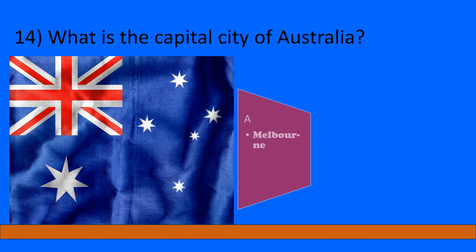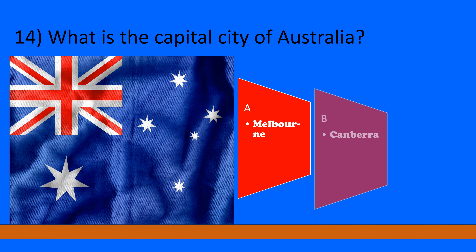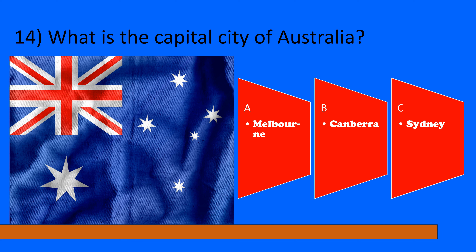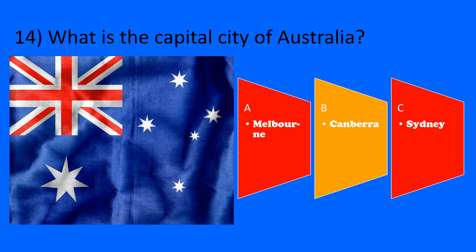What is the capital city of Australia? A: Melbourne, B: Canberra, C: Sydney. The correct option is B, Canberra.